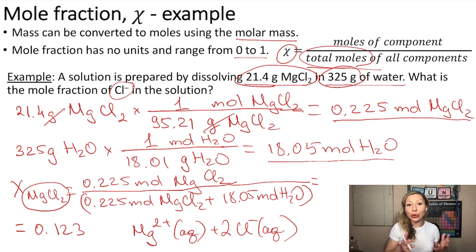In order to calculate the mole fraction of chloride ions, because for each mole of MgCl2 we have 2 moles of Cl- ions, we simply need to multiply this value here by 2.